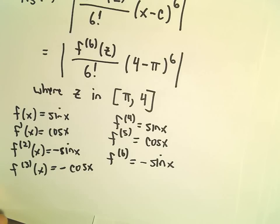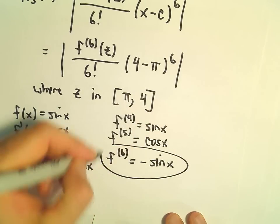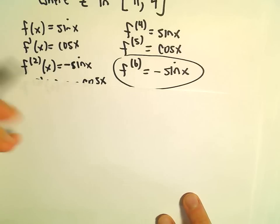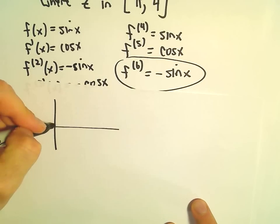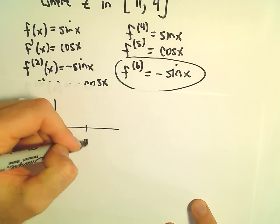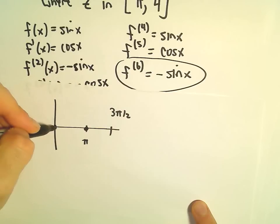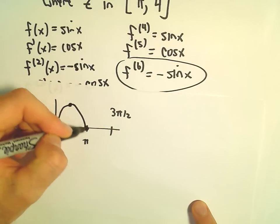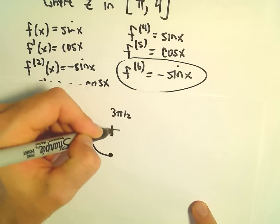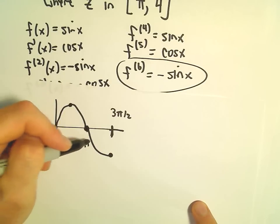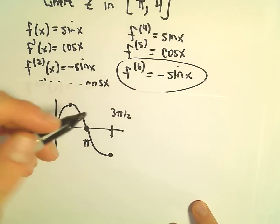Alright, so we're looking at numbers between pi and 4. I'm going to think about this function negative sine x for a second. So I'm just going to make a little graph for sine x. Sine of 0 is 0, at pi it's back at 0, and then at 3 pi over 2, it's down at negative 1. 4 is a number between pi and 3 pi over 2.